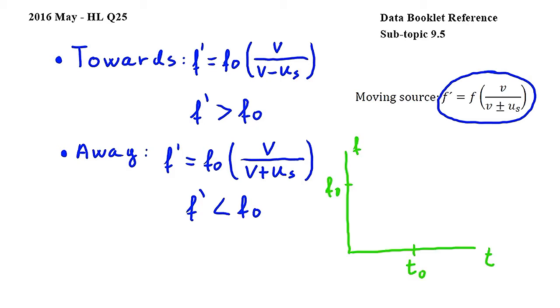Now we can draw the graph to show how the observed frequency varies with time. As we have established, the observed frequency before the train gets to the station, before t zero, is constant and larger than f zero.